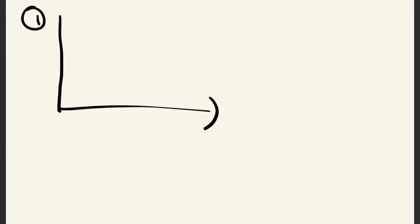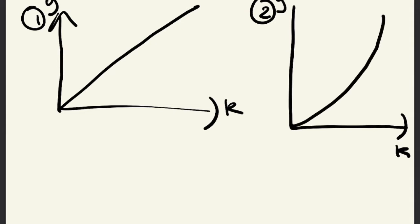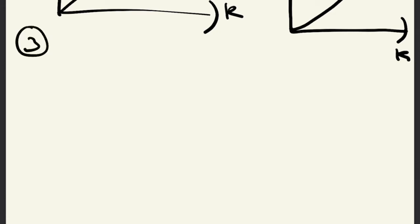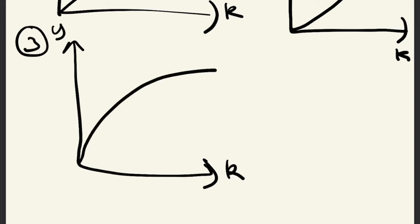That first one, y equals k, is just a power of 1 so it's just a linear graph — a straight line through the origin at 0, 0. The second one, k squared, is a quadratic so it looks like the positive half of a quadratic, curving upwards. And then your third graph, which is to a fractional power, curves like a cave — it's concave. You need to have all of these down so that if you spot any of these powers you can automatically draw them.